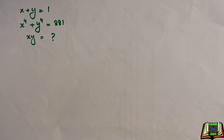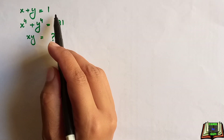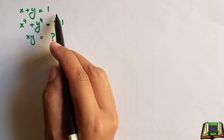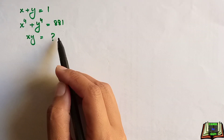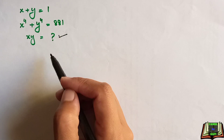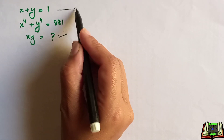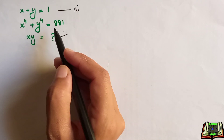Welcome back. In this video we are going to solve this algebraic problem: if x plus y is equal to 1, and x to the power 4 plus y to the power 4 is equal to 881, then we have to find out the value of xy. Let's name x plus y equals 1 as equation 1.